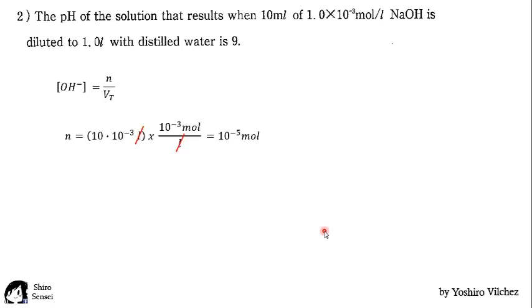The same steps. The number of moles, calculating this, we get 10 to the minus 5 mole. And the total volume, calculating, finally we get 1 liter. Because 10 milliliters doesn't affect. Finally, we get the pOH. It's minus log of hydroxide concentration, which is 5.